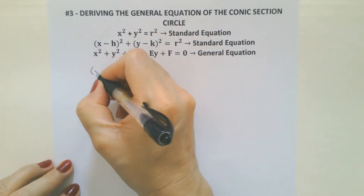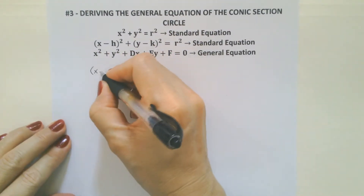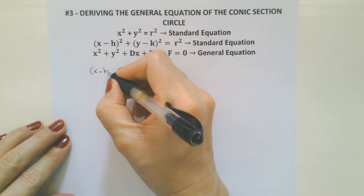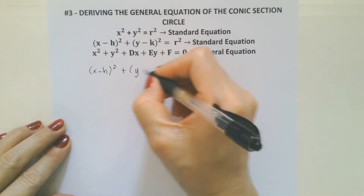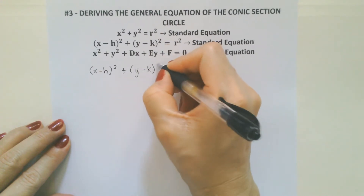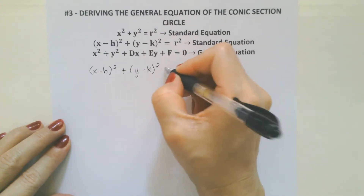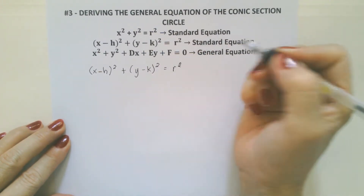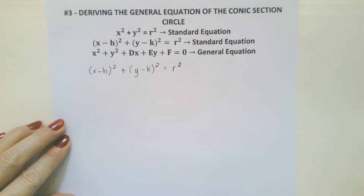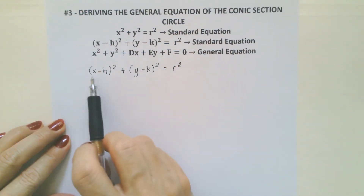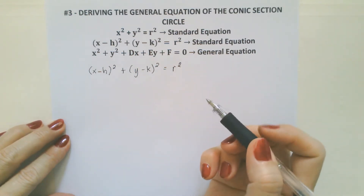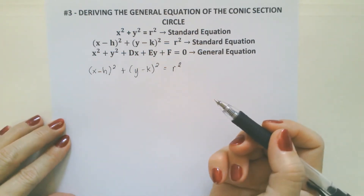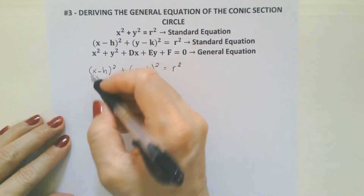The standard equation being x minus h squared plus y minus k squared is equal to r squared. From this standard equation, we're going to derive the general equation. As you can see, x minus h and y minus k are binomials, so this is just squaring the binomial.